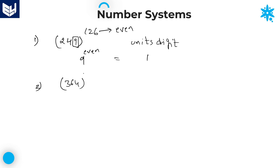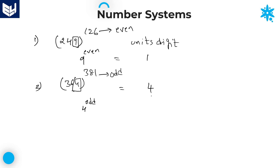Let me take one more example: 364 whole to the power of 381. Here the number is ending with 4 and the power value is an odd number. For odd power of 4, the units digit is always 4. If any number is ending with 4 and the power value is odd, then the required units digit is always 4.